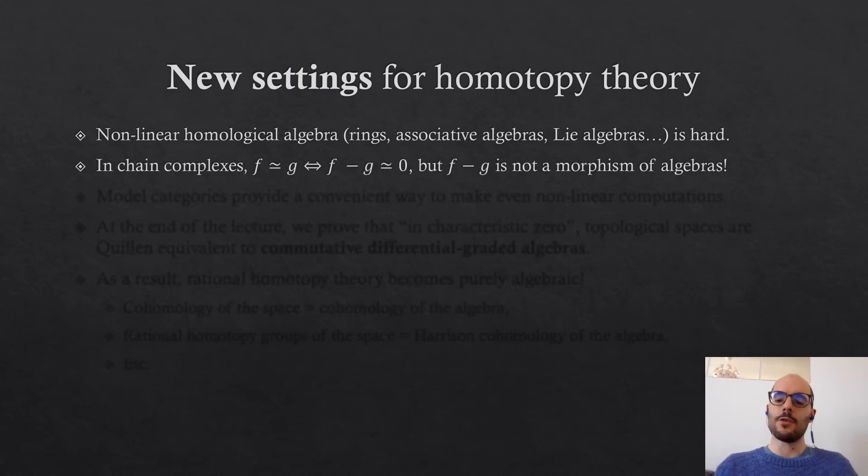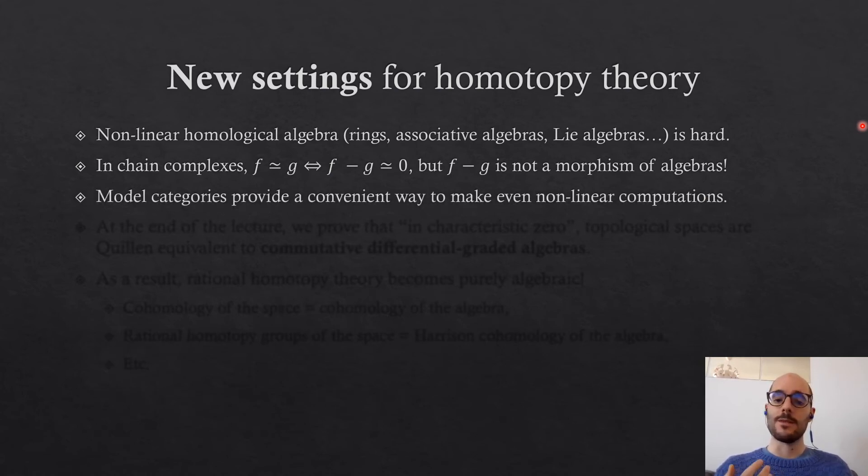Because in chain complexes, it's easy to know when two morphisms are homotopy equivalent: you just check if their difference is homotopy equivalent to zero, which is a condition you can check algebraically. But if you have an algebra or a ring, then the difference of two morphisms is not a morphism anymore, so you cannot work like this. Model categories provide a convenient way to make these computations even in non-linear settings.